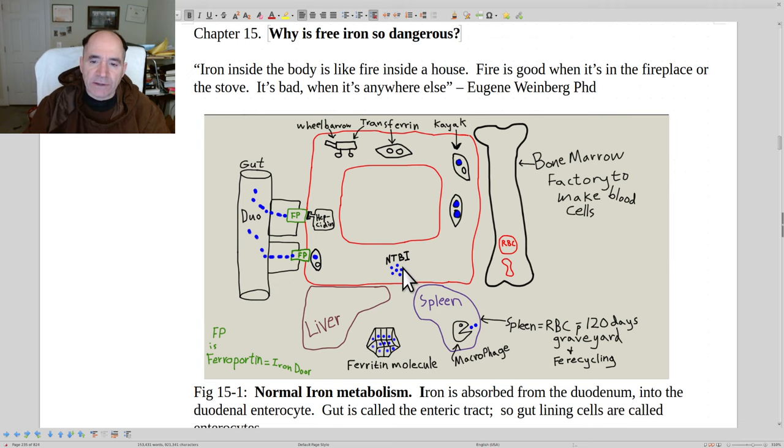This NTBI is non-transferrin-bound iron, so that would be free iron, and that's the dangerous stuff, the bad stuff. We also store a lot of iron in our cells, especially in the liver.